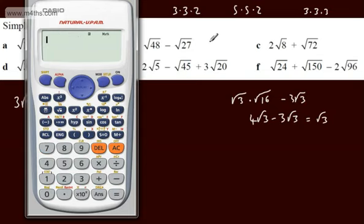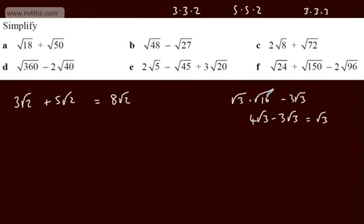I've kind of shortcut that by spotting 16 as one of the factors, then writing that as 4, giving 4 root 3 minus 3 root 3 — but by all means break it down in exactly the same way we've been doing before.